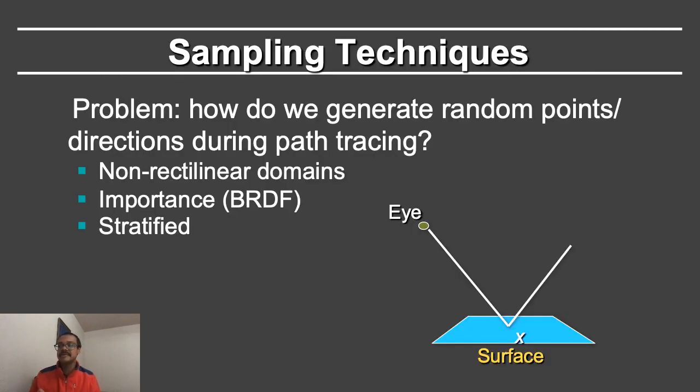The problem for us is how do we generate random points or directions during path tracing? When we have non-rectilinear domains, when we may want to take those paths and do what is known as importance sampling according to features such as the BRDFs of surfaces, and when we want to do things like stratified sampling that I'll discuss later to distribute samples in a more even manner.